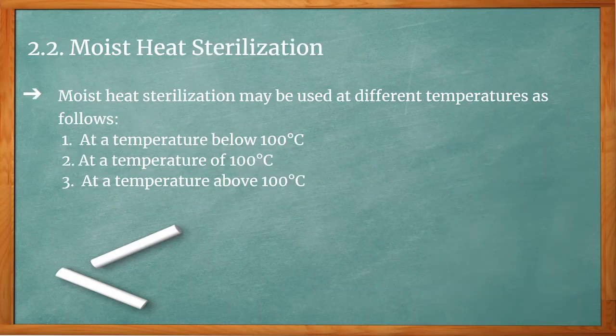The second type is moist heat sterilization, which can be used at different temperatures: below 100 degrees Celsius, at 100 degrees Celsius, and above 100 degrees Celsius.